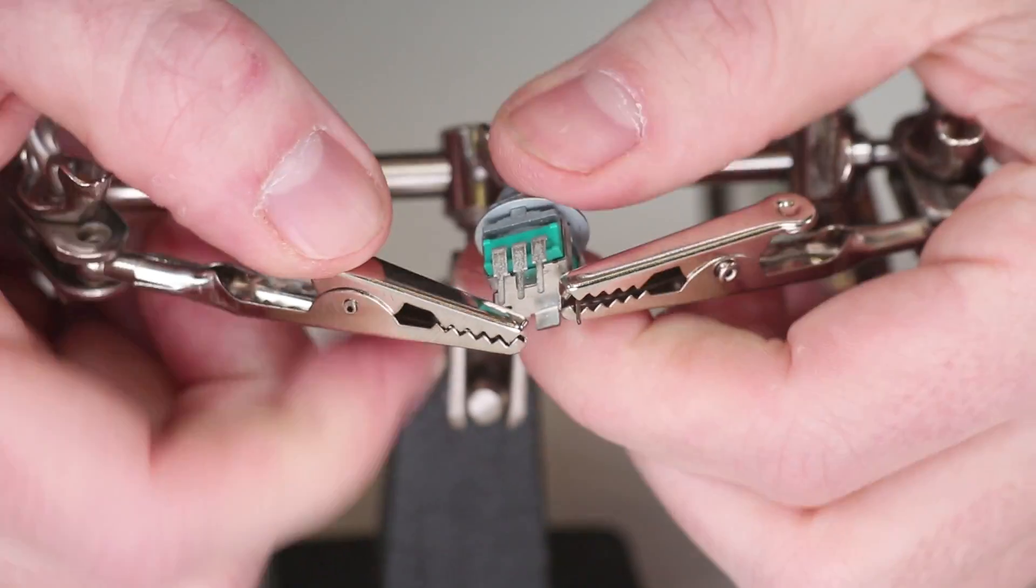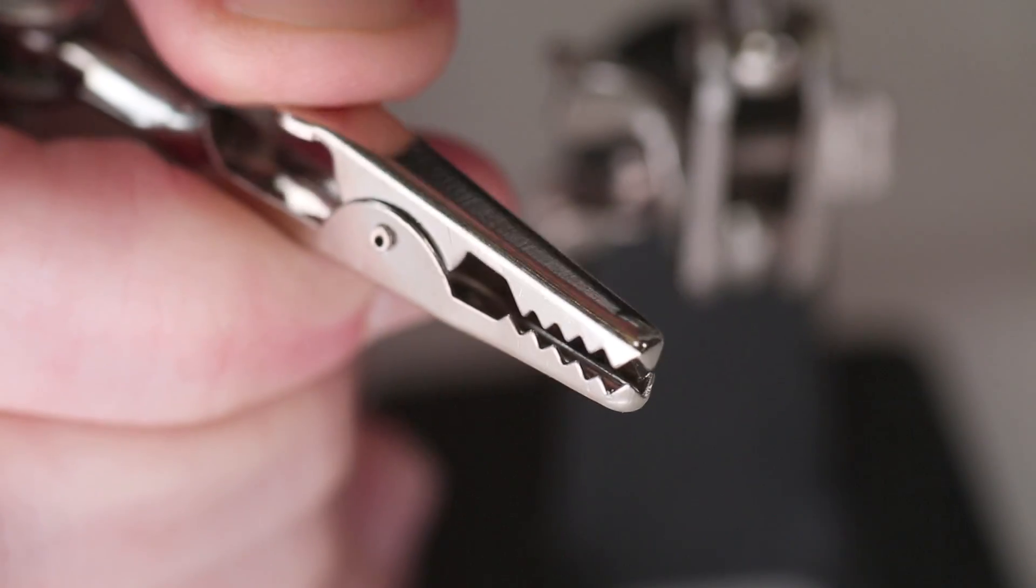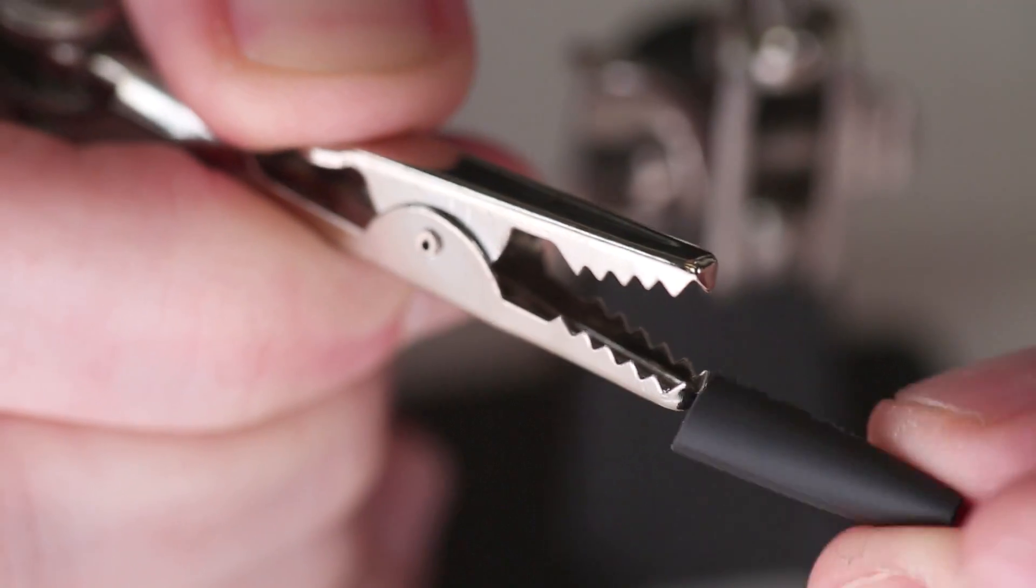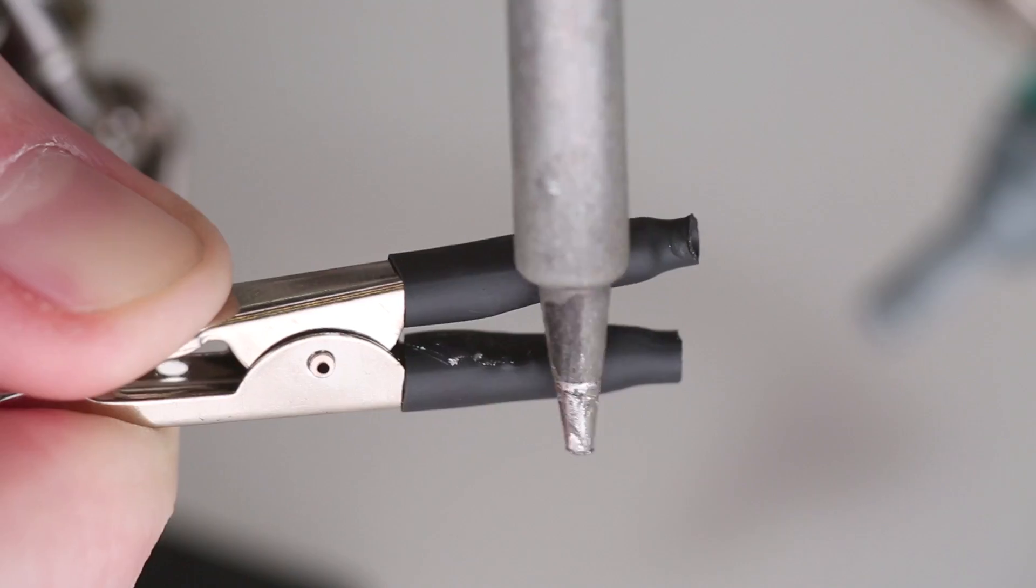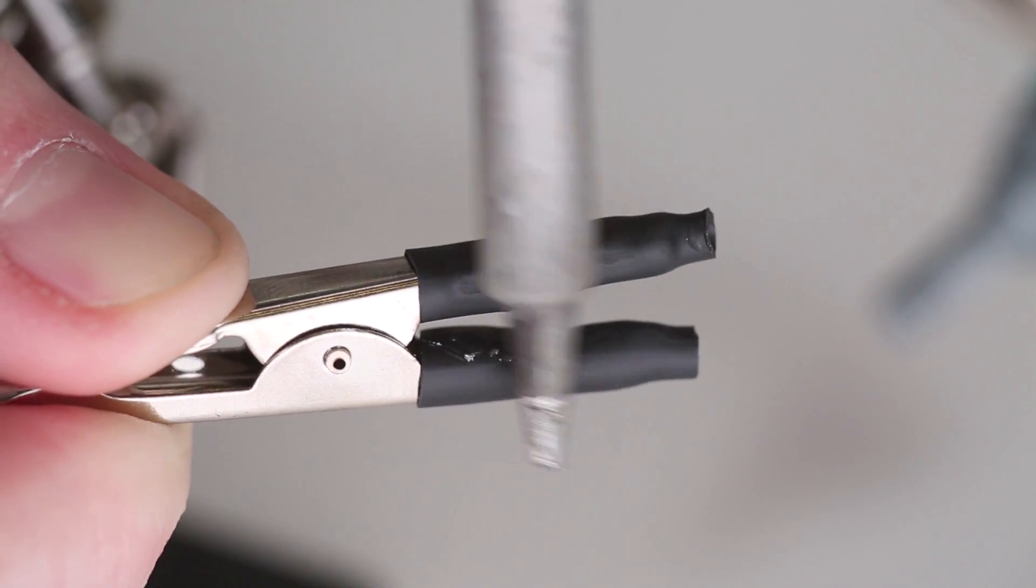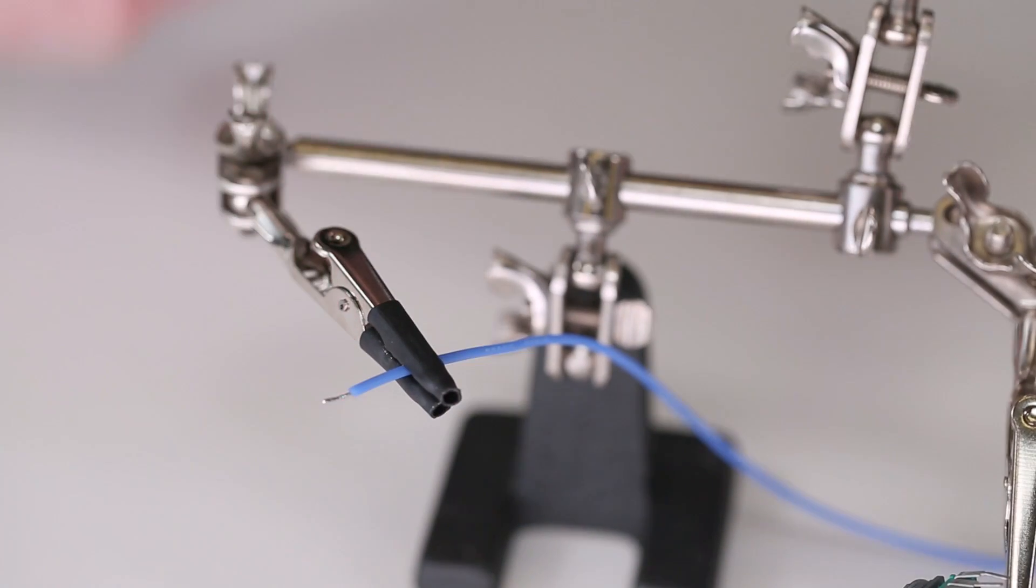By default, the jaws on these things are a little severe. I recommend padding them by adding a bit of heat-shrink tubing. Now you don't have to worry about causing any damage while, say, tinting wire.